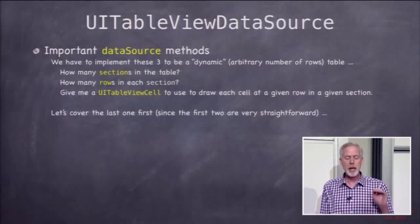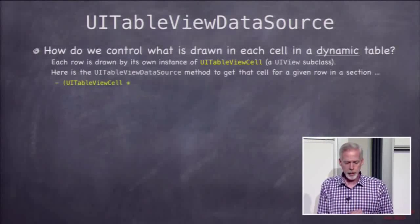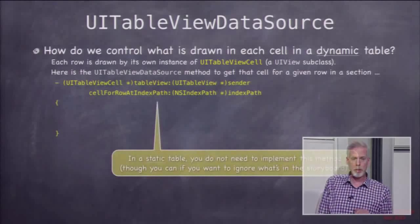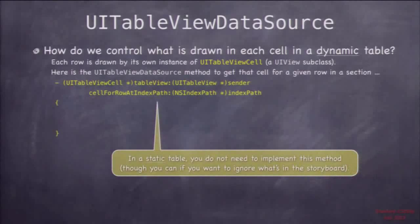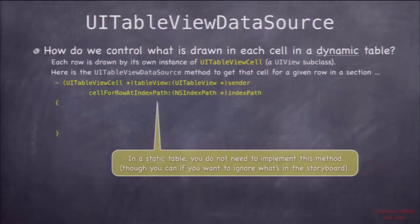The third method in the data source protocol is called tableView:cellForRowAtIndexPath. It's kind of exactly what you'd expect it to be called, once you understand that index path is just an object that describes the section and row within that section. An IndexPath object has two properties: row and section — so that argument is basically just encapsulating the row and section into one object.